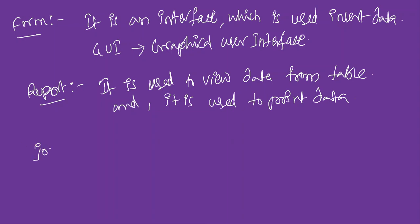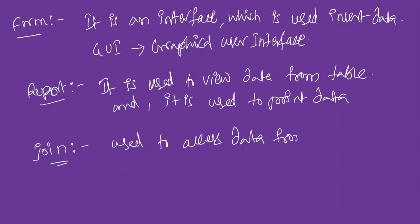Next is join. What is a join in a database? Joins are used to access required data from multiple tables. When we need to access data from multiple tables, we use joins.